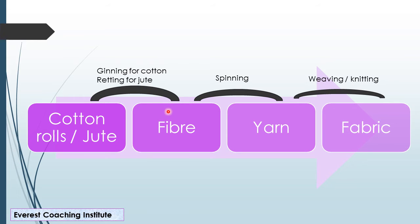One important thing to note: cotton goes straight to fiber, while jute goes straight to fabric through the retting process. Cotton becomes fiber, then yarn becomes fabric. Jute is processed straight through the retting process.